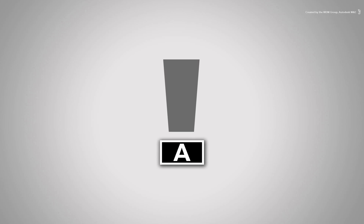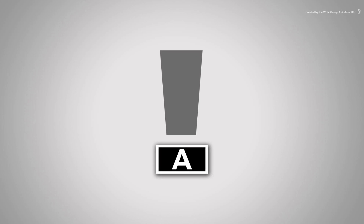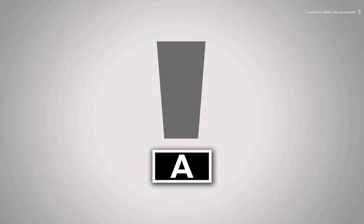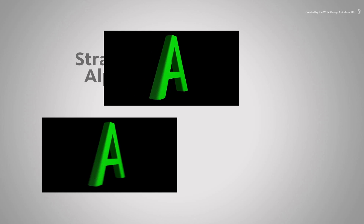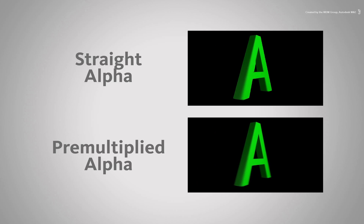The final important part of alpha channels is to be aware that there are two types: the straight alpha and the pre-multiplied alpha. Further on in the series, there will be a video dedicated to the differences and how they affect your compositing in Autodesk Smoke.